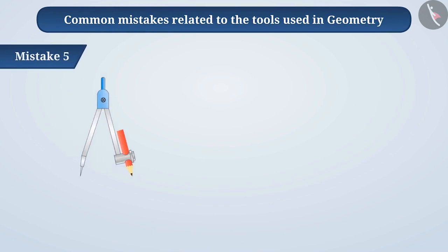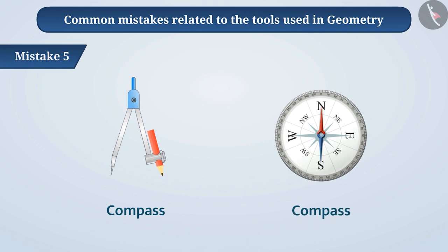Mistake 5: The geometrical instrument compass is an English word which is similar to a magnetic compass. This confuses some students who believe that the compass of a geometry has some relation with the magnetic compass. This is a misconception and there is no relation between them.